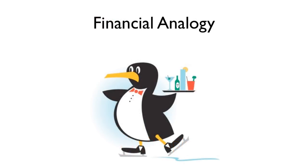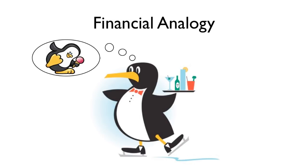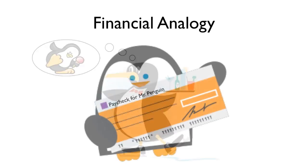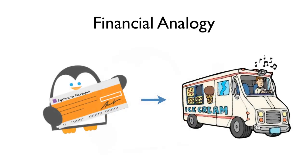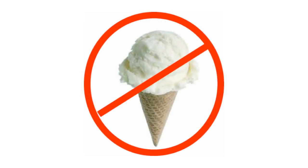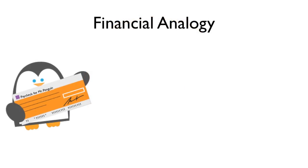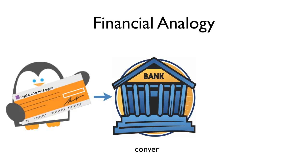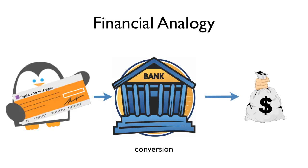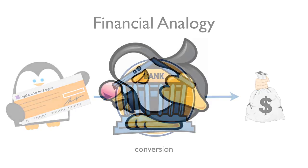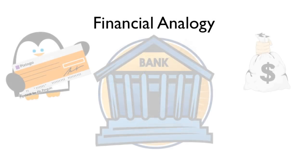Here's my financial analogy. We have a penguin who works hard all day and wants to have some ice cream after work. He gets a paycheck. He takes the paycheck and goes to the ice cream truck, but the ice cream truck won't take a paycheck — they want cash. So the penguin has to go to the bank, which does a conversion and gives him cash in exchange for the paycheck. Now he can buy ice cream. This is not a complicated idea yet, right?